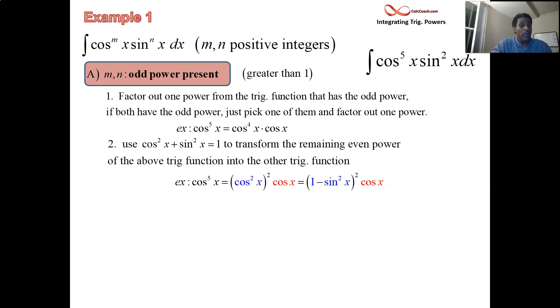And then that informs you what to let u equal. So since you did the factoring out for cosine, the other trig function, sine is what you let u equal. Let u equal the sine of x. Because why? Well, its derivative is cosine x dx. And so, don't forget though, you still have two powers of sine in there.